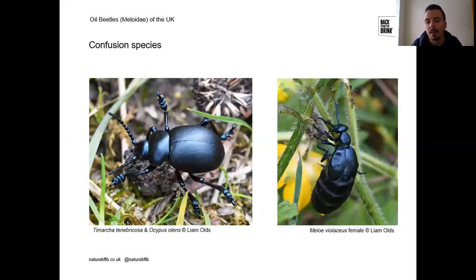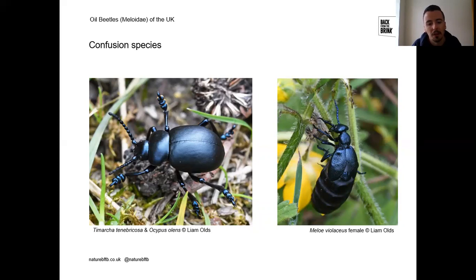The bloody-nosed beetle has key characteristics that differentiate it from oil beetles. Its wing cases, or elytra, cover the entire abdomen, whereas in the oil beetle the short wing cases leave much of the abdomen exposed. The thorax on the bloody-nosed beetle is larger and more shield-shaped, compared to the squarer or rectangular-shaped thorax in oil beetles. It also has swollen feet, formed into large pads, which oil beetles don't have.